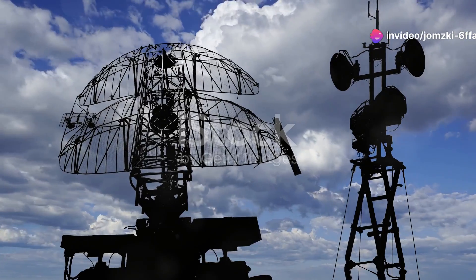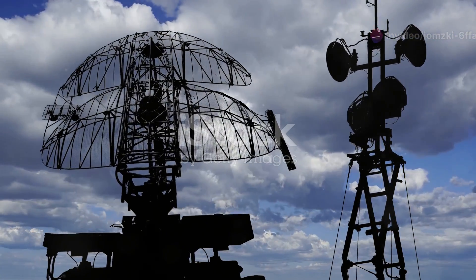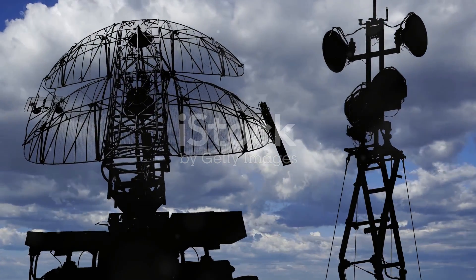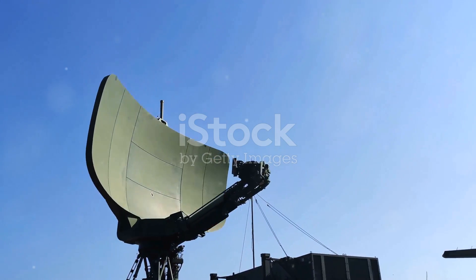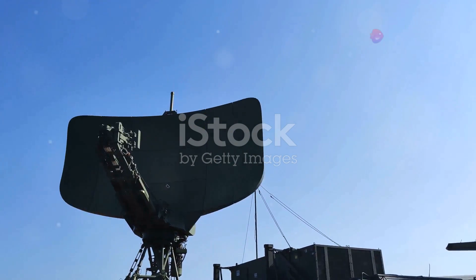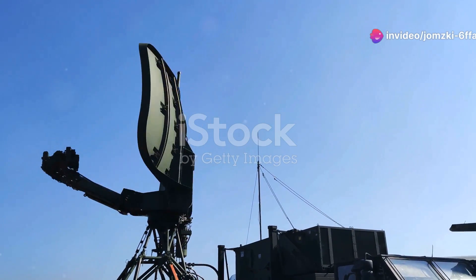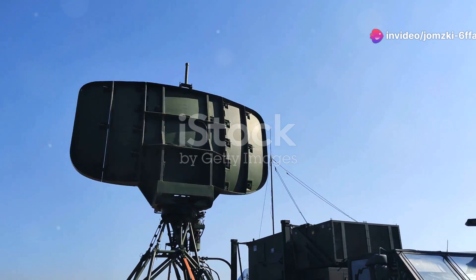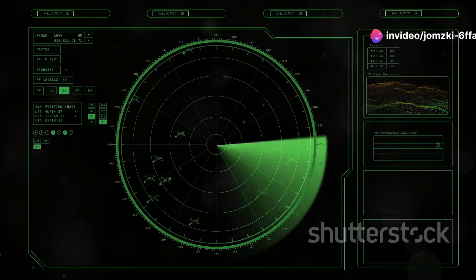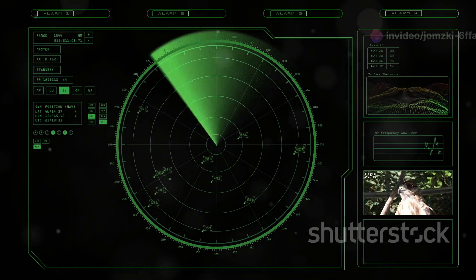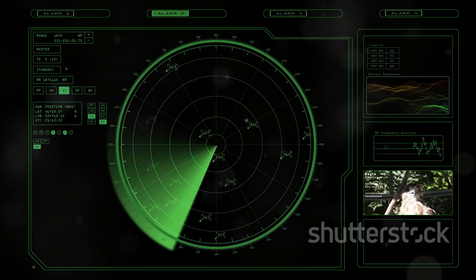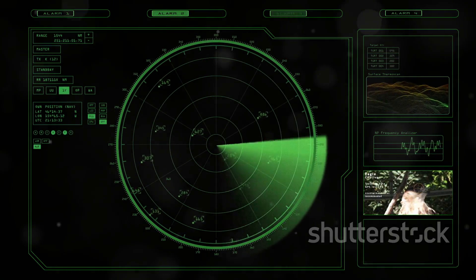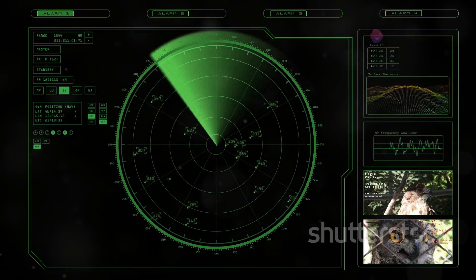Eyes in the Sky: The radar system, a game of radio waves. At the heart of every effective SAMS system lies its radar, the unsleeping eye that scans the skies for potential threats. Radar, short for Radio Detection and Ranging, works by emitting electromagnetic waves and analyzing the echoes that bounce back from objects in their path.